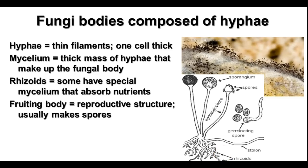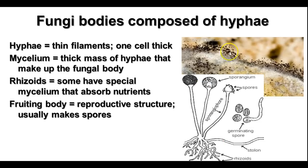Fungal bodies are composed of structures called hyphae. The hyphae are thin filaments that are one cell thick, and the mass of hyphae that makes up the fungal body is called the mycelium. In most fungi, the mycelium is underneath the surface they're on. This picture here is of bread mold, and the black dots are the sporangia that produce the spores.